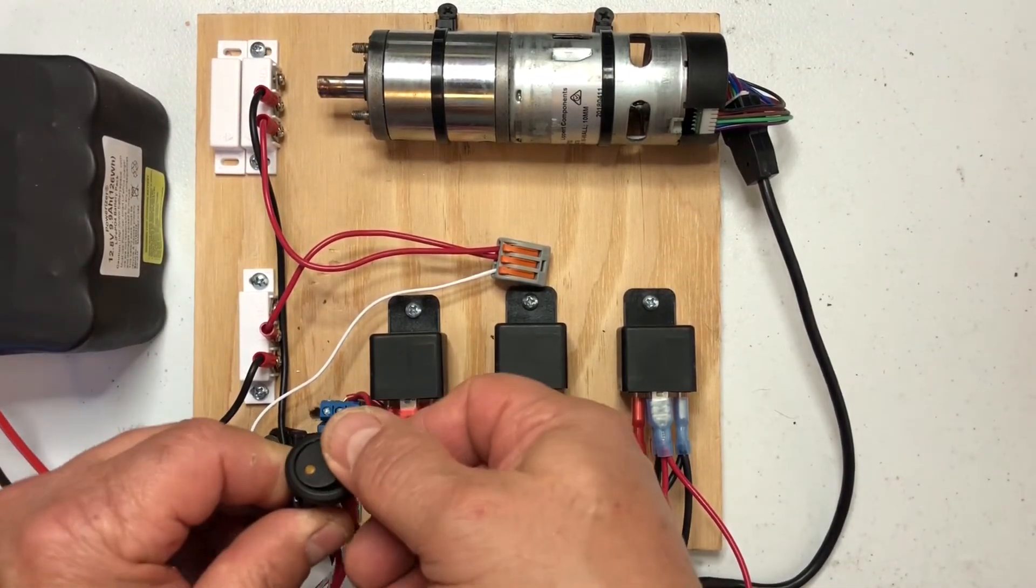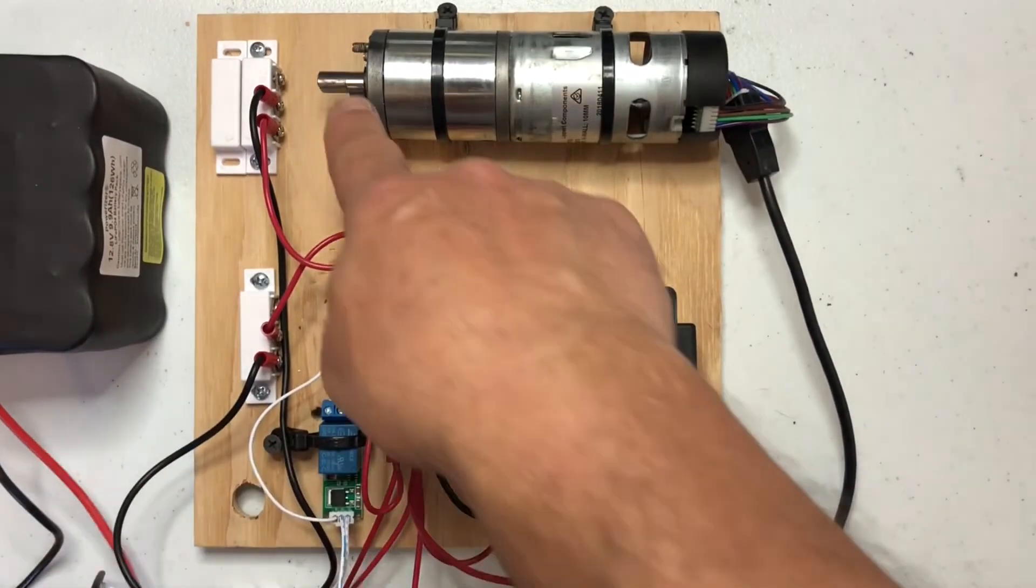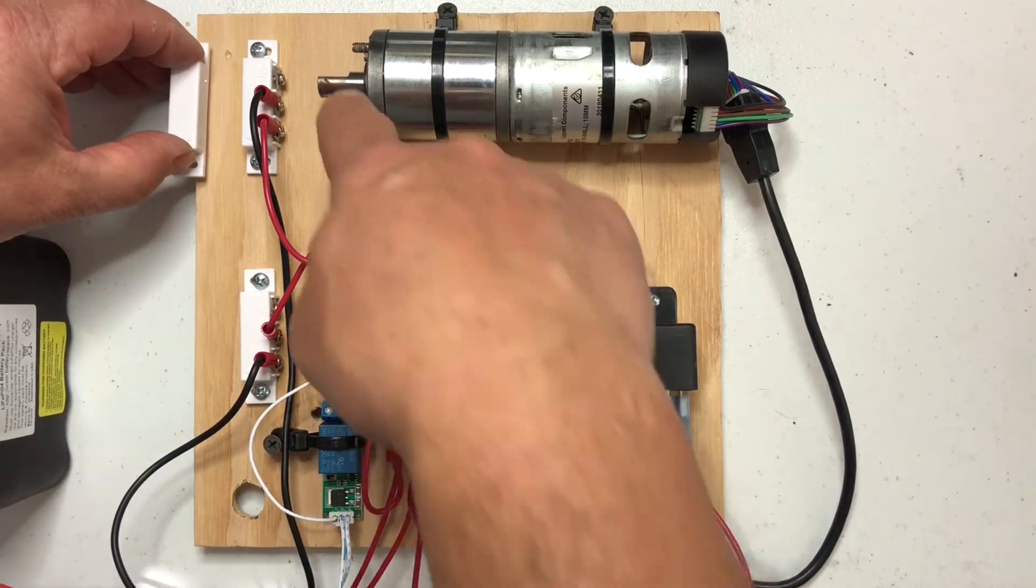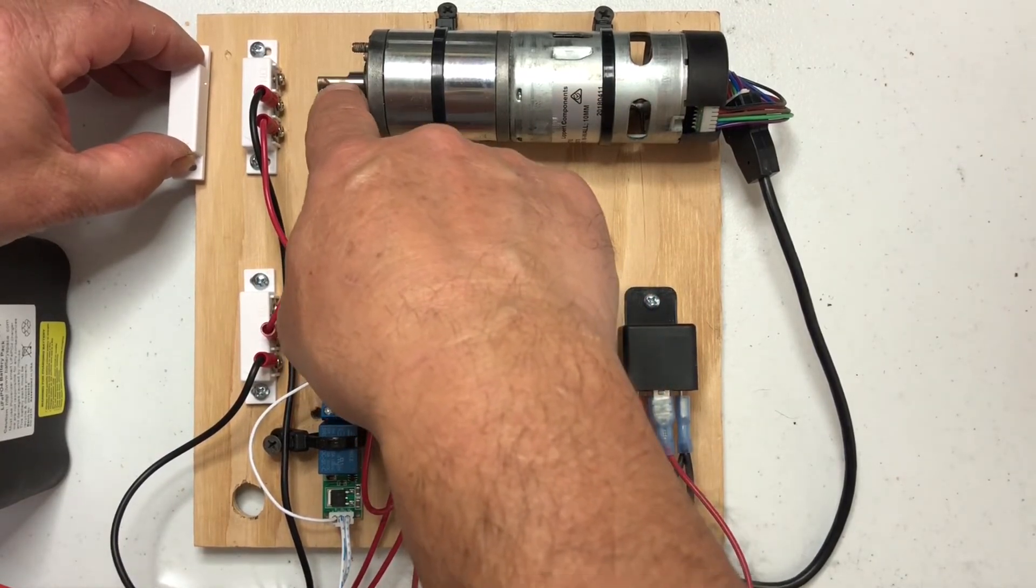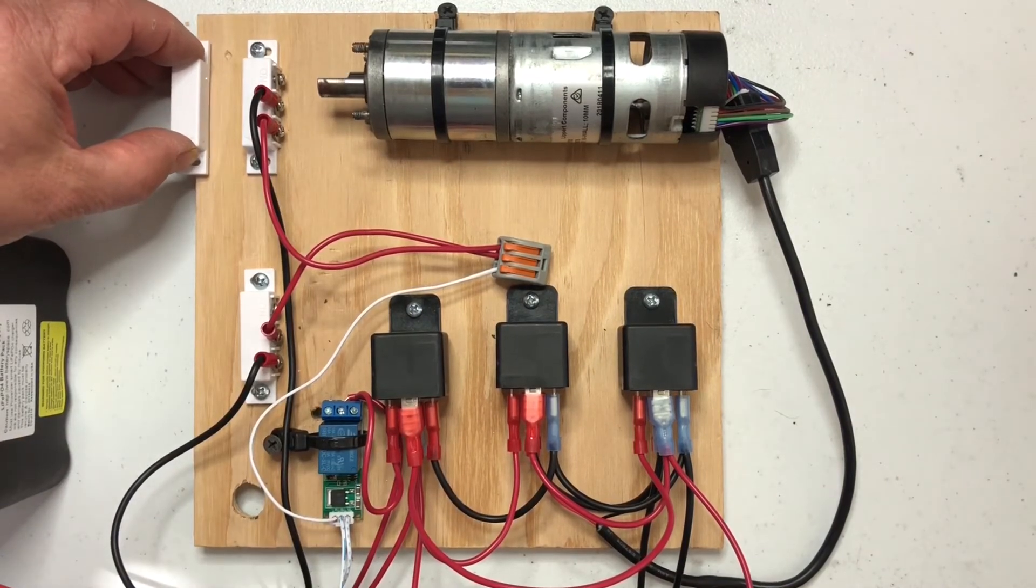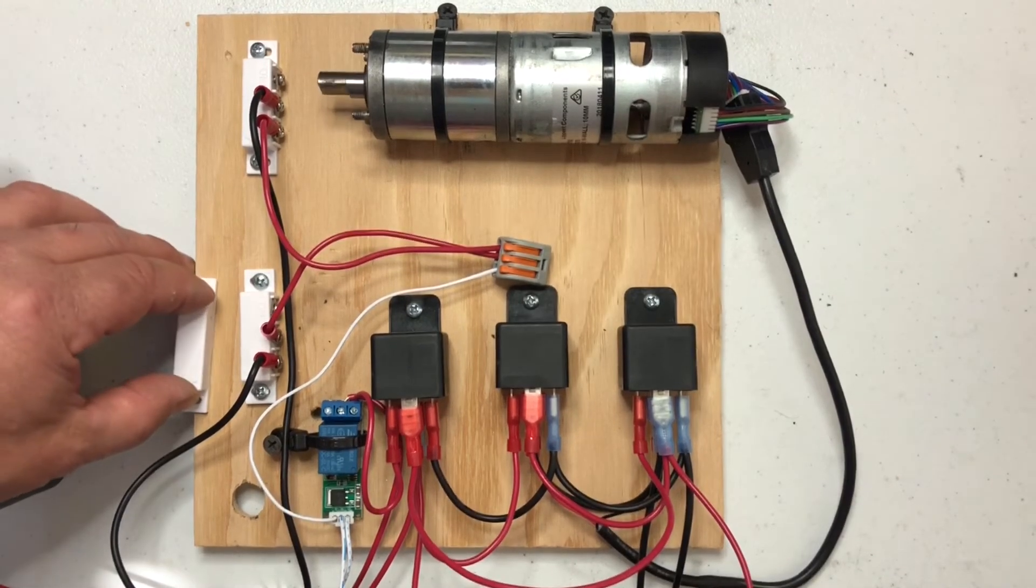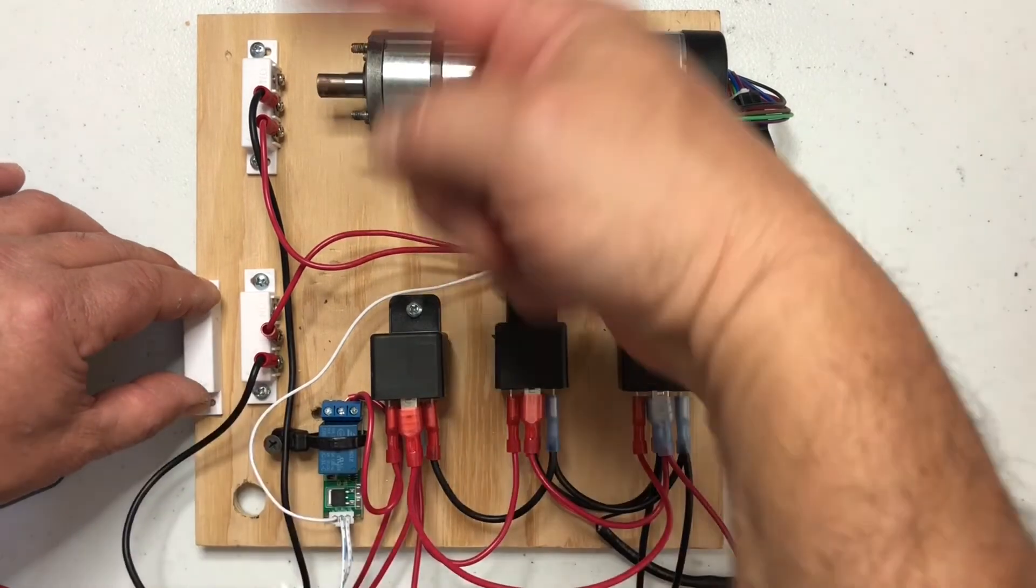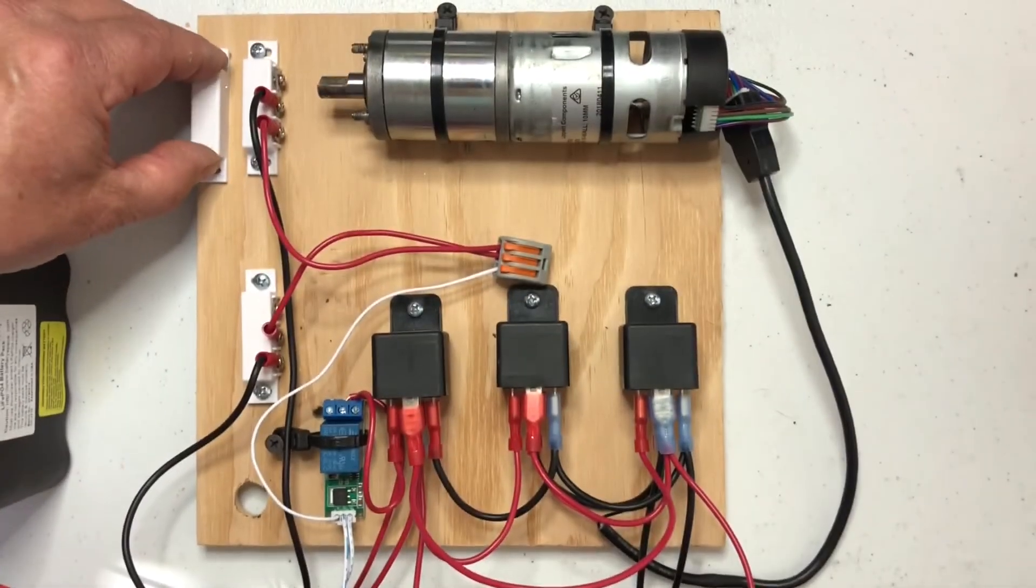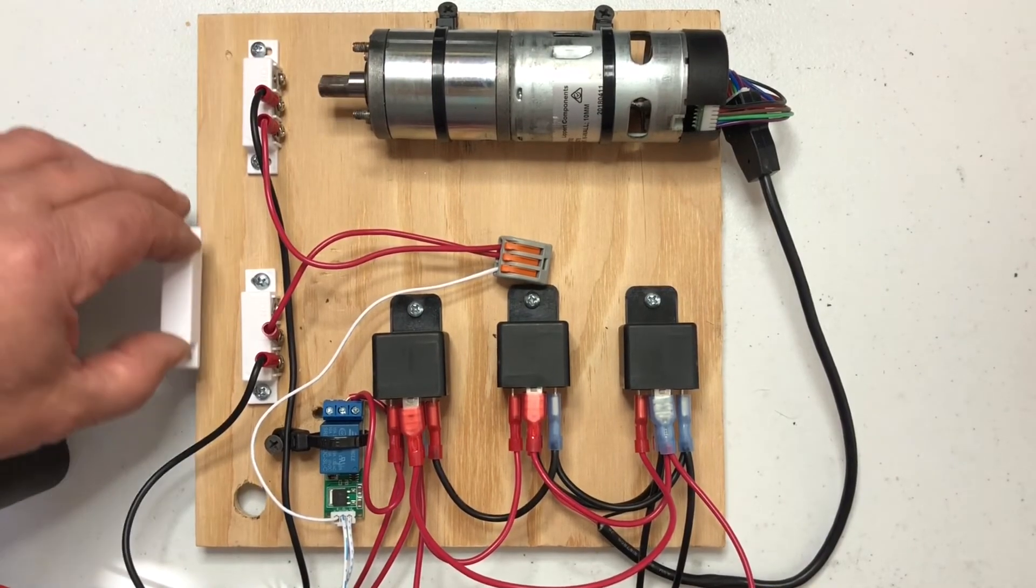So when I turn the switch on you'll see the motor is turning a certain direction. So we would have something connected from here that's moving this magnet, whatever you're trying to move. And then when it goes to this position here you'll notice it turns the other way. So we can go back and forth.